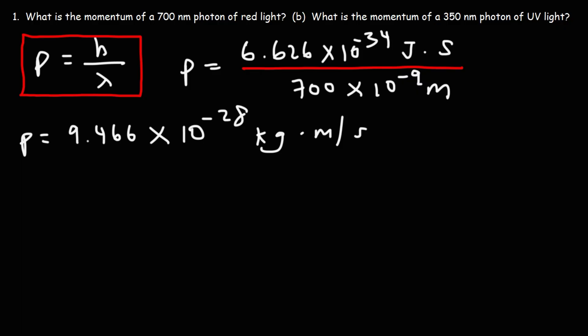So that's the momentum of a photon of red light. Now what about part B? What is the momentum of a 350 nanometer photon of UV light?